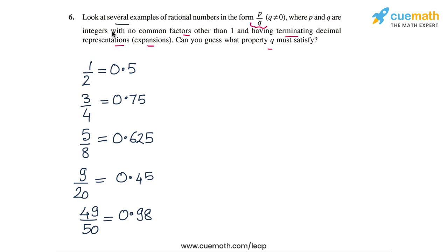So I have taken 5 examples — the question said take several examples. All of these rational numbers have terminating decimal representations. Is there a pattern? Can you spot something special about these 5 rational numbers that makes their decimal representation terminating? To figure it out, let's write the decimal forms as fractions by removing the decimal points.